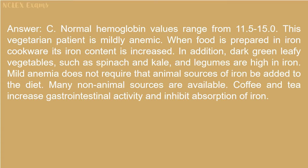Answer: C. Normal hemoglobin values range from 11.5–15.0; this vegetarian patient is mildly anemic. When food is prepared in iron cookware, its iron content is increased. In addition, dark green leafy vegetables such as spinach and kale, and legumes, are high in iron. Mild anemia does not require that animal sources of iron be added to the diet. Coffee and tea increase gastrointestinal activity and inhibit absorption of iron.